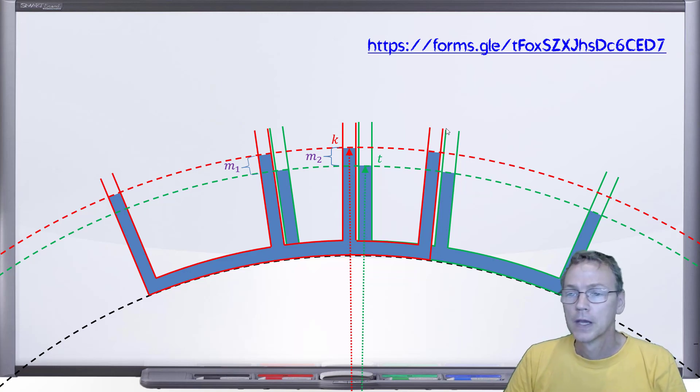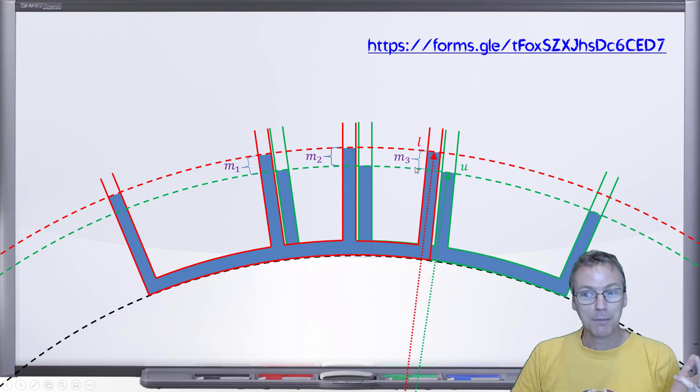And then finally, we have M3. M3 is the difference between L and U from those two previous forms. So you already worked out all that information.